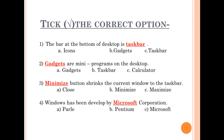Take the correct option. Number 1: The bar at the bottom of the desktop is dash. Answers are icons, gadgets, taskbar — and the correct answer is taskbar. So the sentence will be: The bar at the bottom of the desktop is taskbar.